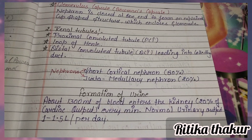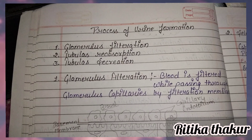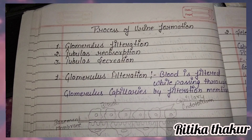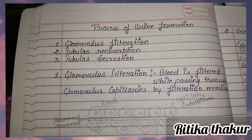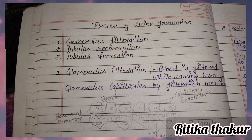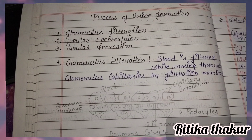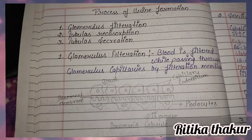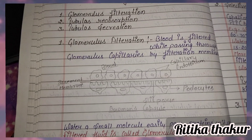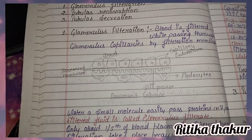The process of urine formation involves three steps: glomerular filtration, tubular reabsorption, and tubular secretion. In glomerular filtration, blood is filtered while passing through the glomerulus capillaries by the filtration membrane. Water and small molecules can pass through, but proteins cannot, forming what is called the glomerular filtrate.